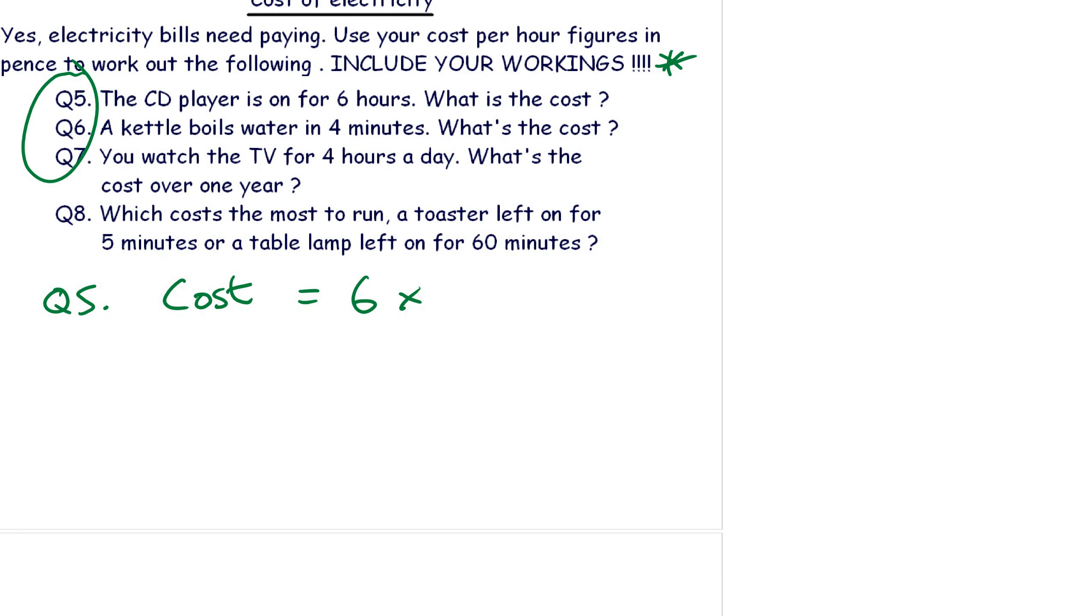So it's six hours times 0.2. That gives us a grand total of 1.2 p. Question six: a kettle boils for four minutes. What's the cost? Oh, you've got to be careful here. You've been given the cost of the kettle per hour. If you go up to your table, you'll find that it's 30.8 pence per hour. But it's not been on for an hour, it's only been on for four minutes. How many minutes in an hour? 60. So 30.8 multiplied by four divided by 60 will give us 2.05 pence. Check these answers on your calculator please.